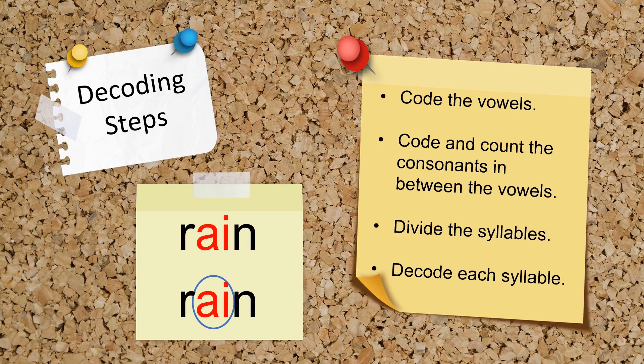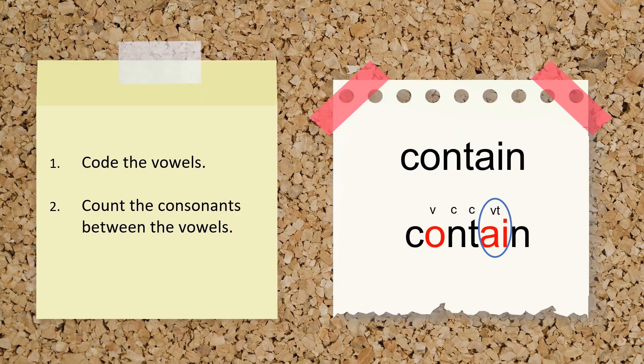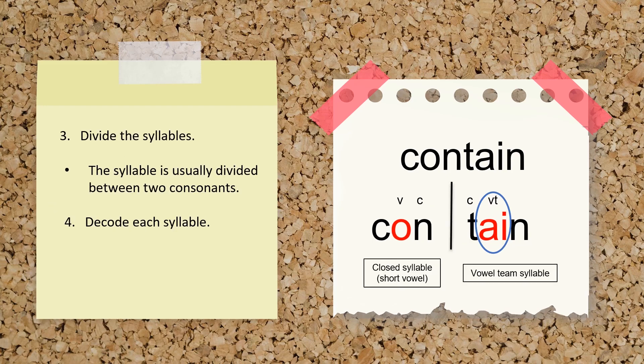Let's look at a couple of examples. First, have students identify and code the vowels. You may wish to have students use VT to code the vowel team. Then, code and count the number of consonants between the vowels. In this case, there are two consonants between the first vowel and the vowel team. Next, the syllables can be divided.